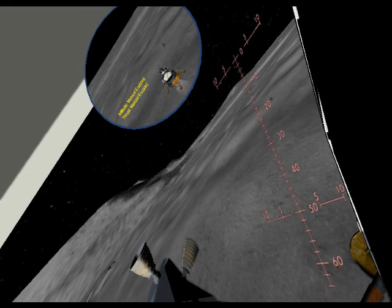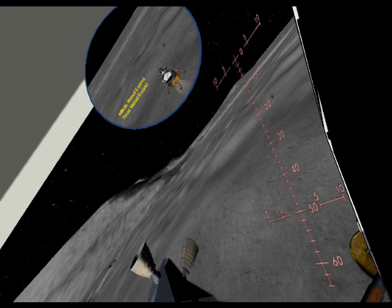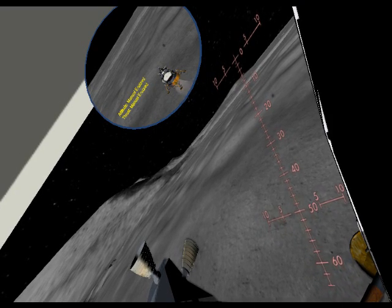When we get below 100 feet, we want to be descending at a rate of less than 5 feet per second. 200 feet.